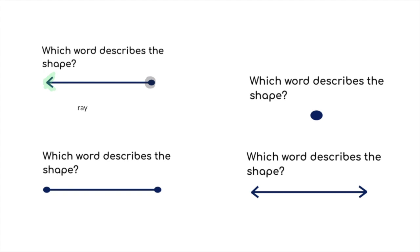Let's move on to the next one. This one has two end points. Remember, that would be part of a line. So we call that a line segment. Let's look at the next one. It's just an exact dot. We call that a point.